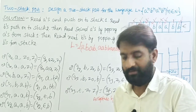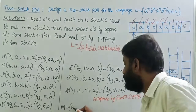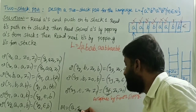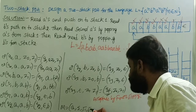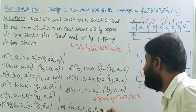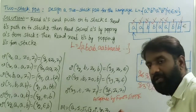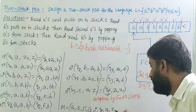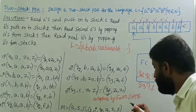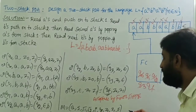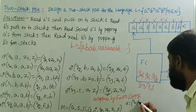Now define the two-stack PDA formal definition. M equals (Q, Σ, Γ1, Γ2, δ, q0, z0, z1, F), where Q is the set of states, Σ is the input alphabet, Γ1 is the stack one alphabet, Γ2 is the stack two alphabet, δ is the transition function, q0 is the initial state, z0 is the initial symbol in stack one, z1 is the initial symbol in stack two, and F is the set of final states. The set of states Q equals {q0, q1, q2, q3, qf}.